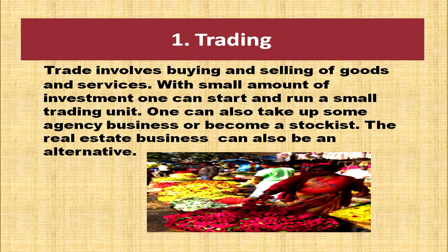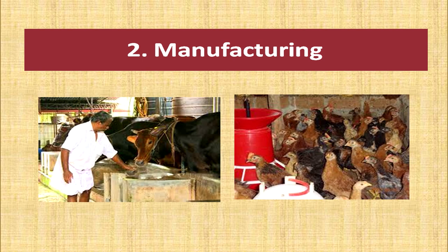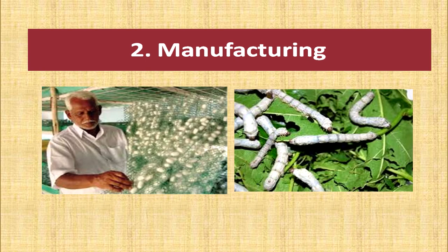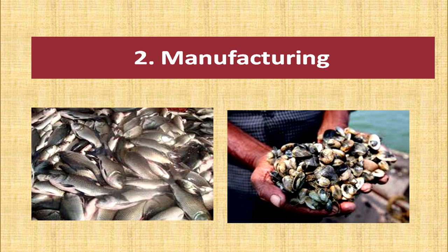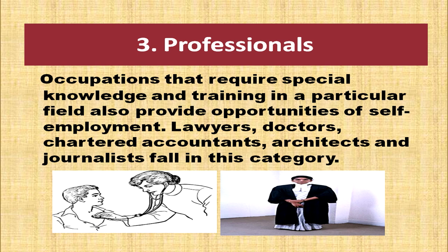One can also take up some agency business or become a stockist. Real estate business can also be an alternative. Manufacturing businesses like manufacturing bricks, or producing bakery items or confectionery, require a small amount of capital and simple industrial equipment.